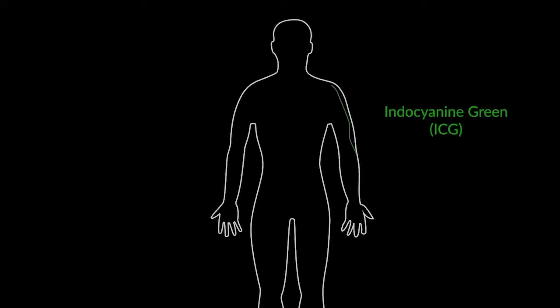We've developed a new way to image the RPE based on the use of an existing FDA-approved dye called indocyanine green, or ICG. This dye is injected intravenously, where it travels up to the eye and is taken up rapidly by the RPE cells.